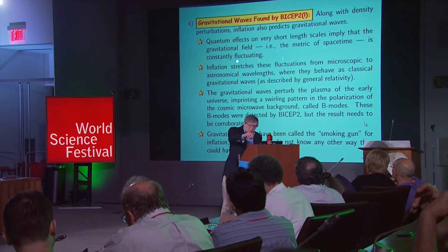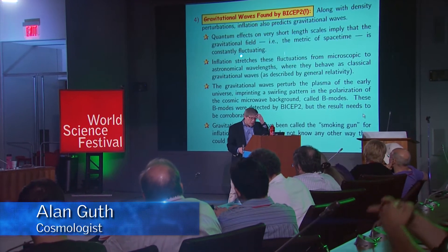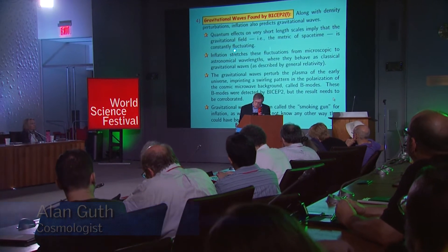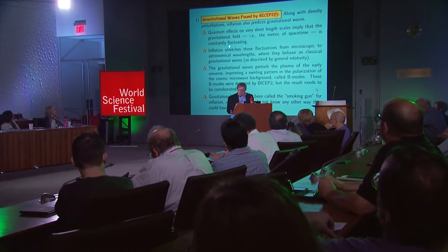The fourth item I want to talk about is gravitational waves, which have now been seen by BICEP2 just a few months ago. The announcement was made on March 17th of this year. Along with density perturbations, inflation also predicts gravitational waves, and it's a quantum phenomenon. Quantum effects on very short length scales mean that the geometry of space itself will be constantly fluctuating. Normally this is confined to incredibly short length scales and totally invisible to us, but inflation stretches these quantum fluctuations to very large scales — essentially the same thing that happens with the density perturbations discussed earlier.